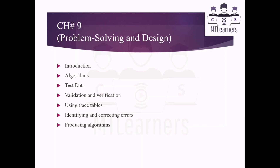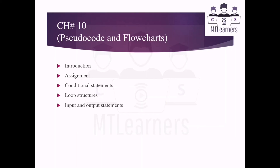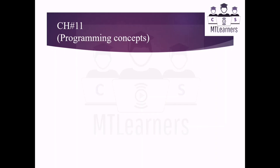Using pseudocodes and flowcharts is explained, then identifying and correcting errors from different algorithms is explained, and how to produce different algorithms is defined in Chapter 9. Moving to Chapter 10, Pseudocode and Flowcharts, you will study introduction of both flowcharts and pseudocodes, then assignment, conditional statements, loop structures, input and output statements, standard actions, and examples of algorithms in pseudocode. The standard flowchart symbols used specifically in the Computer Science 2210 subject code will also be explained.